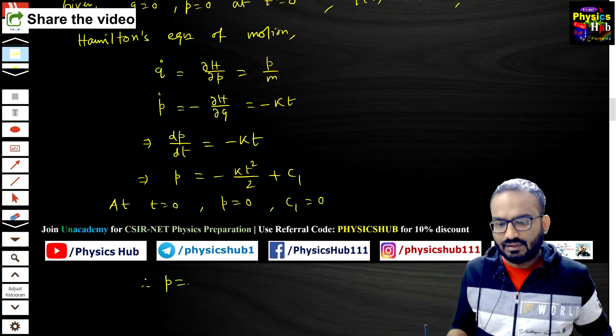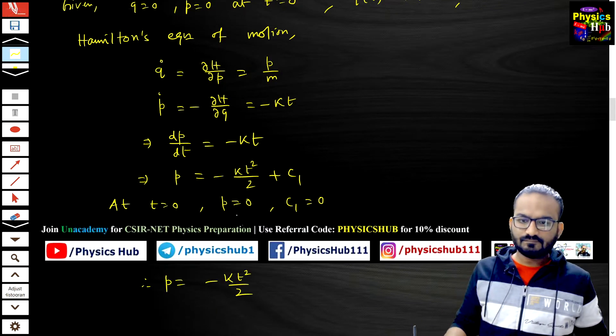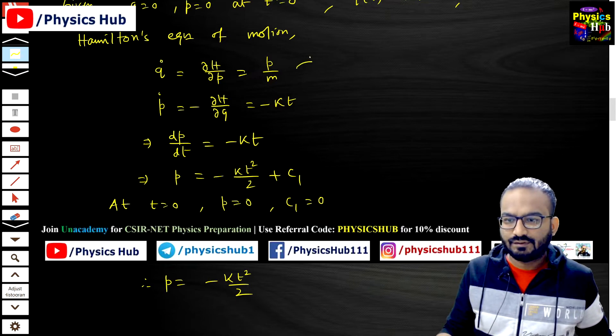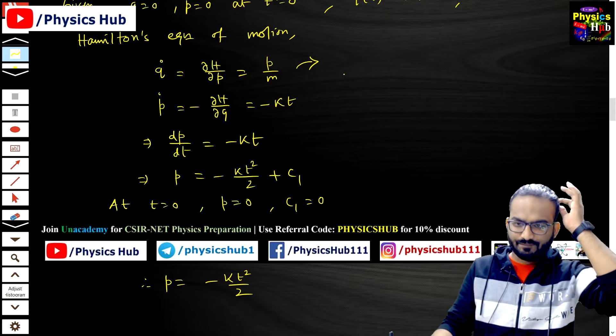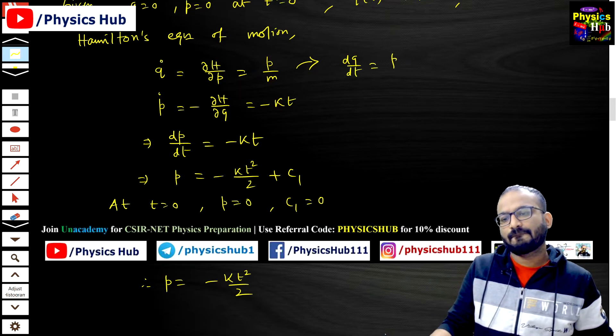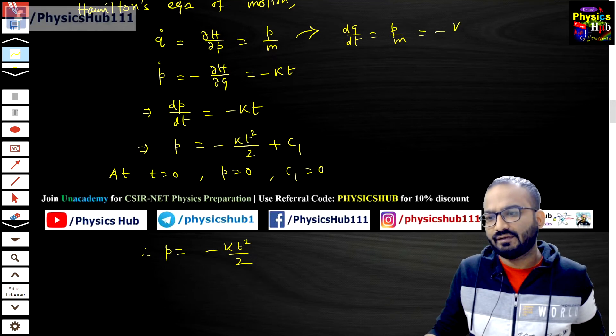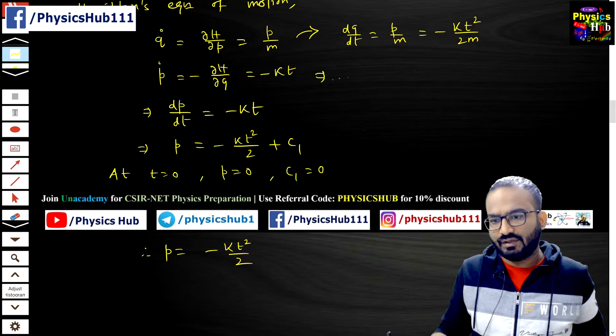If c1 equals 0, your p becomes minus k t square upon 2. Now let's come back to this q dot equals p by m. So dq dt equals p by m. We have got the value of p: minus k t square by 2, so it becomes minus k t square upon 2m.